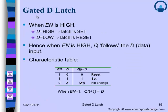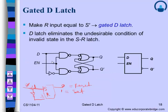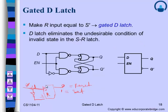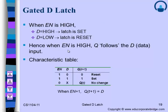The gated D latch also has an enable pin. When the enable is high, the latch starts working. When enable is high and D=0, the other input automatically becomes 1 after passing through the NOT gate. When enable is high, Q follows D — that is, when D is high, the latch is set; when D is low, the latch is reset. The characteristic table for the D latch: D=0 gives output 0 (reset state), D=1 gives output 1 (set state).